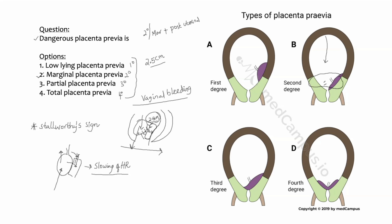Take home message: Stalwortis sign is a sign which helps in diagnosing marginal placenta previa. In Stalwortis sign, we push the head back into the pelvic inlet; on doing so, because of compression of the umbilical cord, there will be bradycardia in the fetus. These are the three important things covered: types of placenta previa, what is dangerous placenta previa, and what is Stalwortis sign.